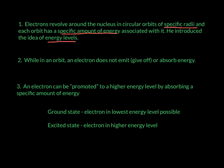While in an orbit, an electron does not emit or absorb energy. So in that orbit, it just has a specific amount of energy. We say that it's quantized. That just means it has a specific amount of energy.